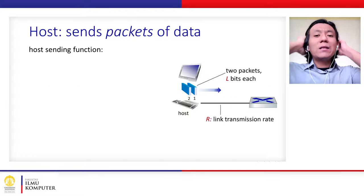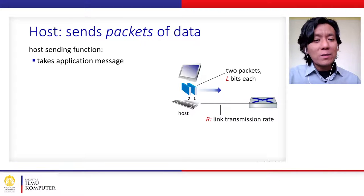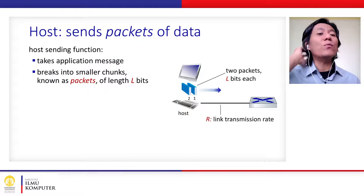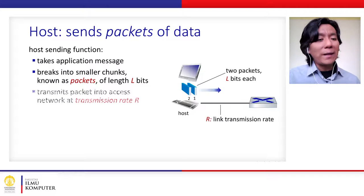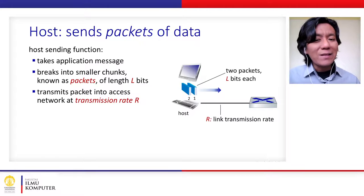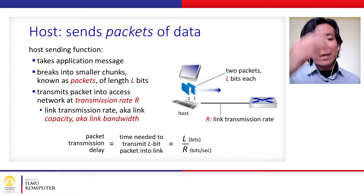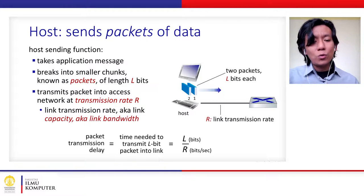Now we will learn how a host actually sends packets of data. The computer takes an application message as a packet. Some applications may have bigger messages to send, so they chunk the message into smaller packages of bits. These packets are transmitted over the link at a particular transmission rate or bandwidth R. We can simply calculate the time needed to transmit an L-bit packet by dividing the packet size L by the bandwidth R: time = L / R.